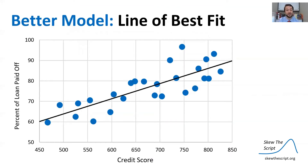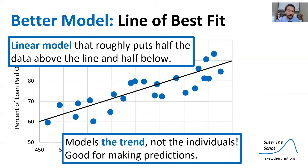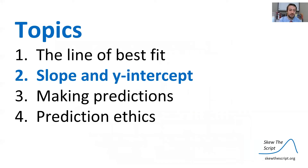A better model is called the line of best fit, which we've drawn here. You can think of it as a linear model that roughly puts half the data above the line and half the data below the line. It models the trend, not the specific random variations of individuals, so it's pretty good for making predictions. You'll learn more about constructing the line of best fit in a statistics class — this is an algebra series, so we're introducing the concept now.